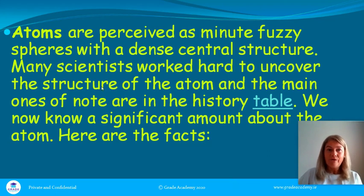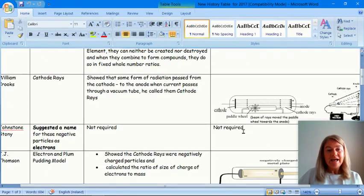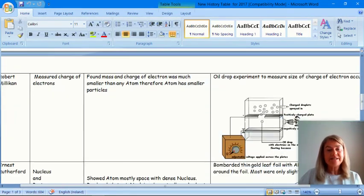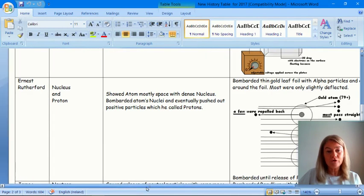We know a lot about atomic structure from the history table which we dealt with last day. We were particularly interested in the famous work, the gold foil experiment that Ernest Rutherford did. He's famous for the idea of the nucleus and also the proton.